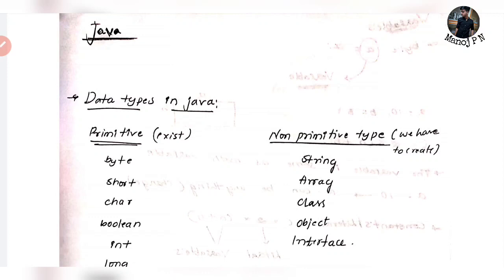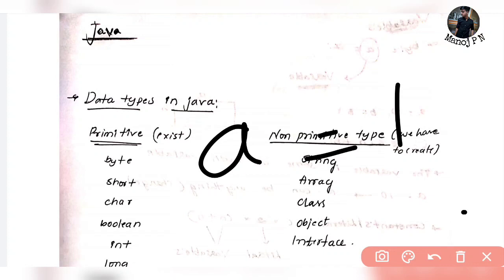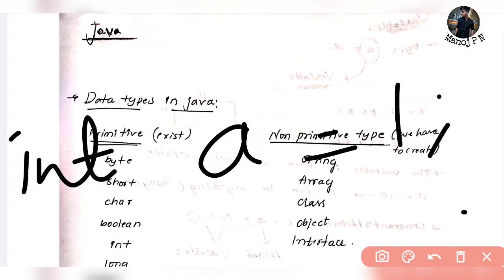Type language means before using any data, you have to specify the type of it. Let's say if you are using the number one - what type is it? It is integer. Let's say if you are using a variable, like: int a is equal to one. That's right.